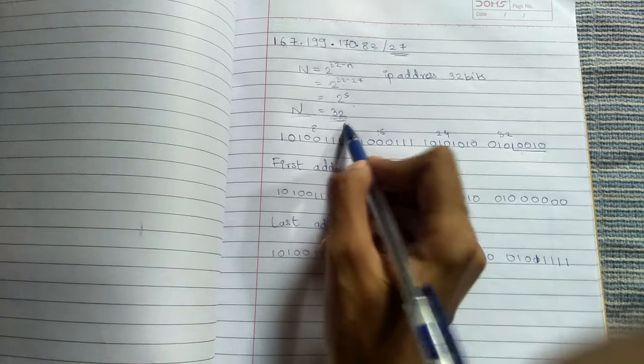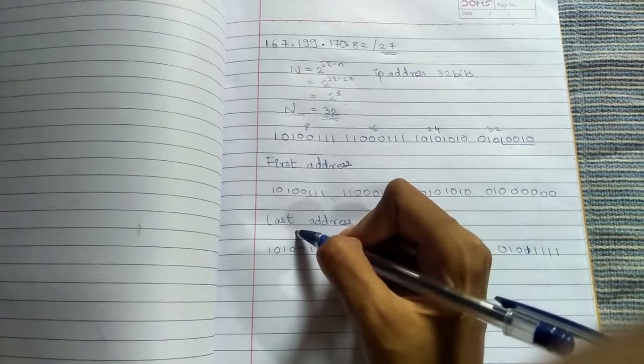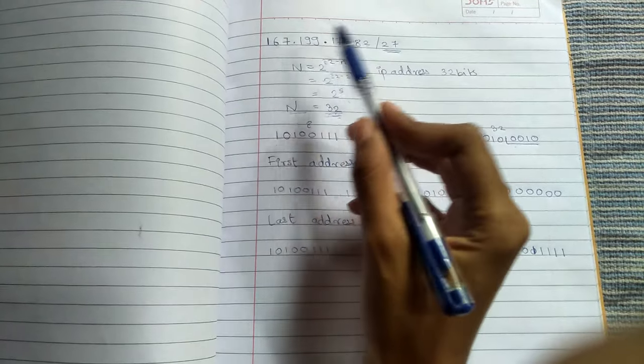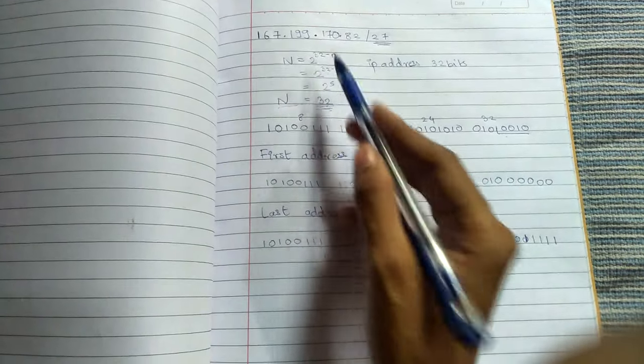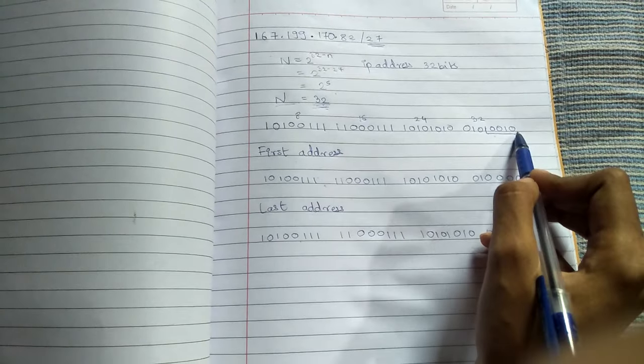The number of addresses in a network is equal to 32. To find the first address and the last address, we have to convert this IP address from decimal to binary format. I have converted here, you can see.